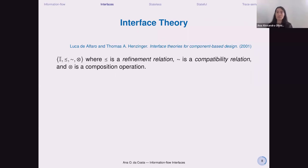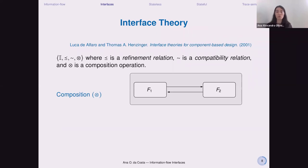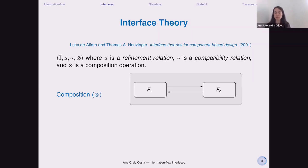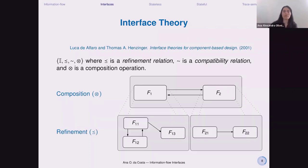We have interfaces as our models, and we need to define two relations and one operation. First, we need a notion of composition: if we have interface F1 and interface F2, what is the result of composing them? We assume any two interfaces can be composed. On top of this, we need a compatibility relation that tells us when composing two interfaces results in a well-formed interface. Finally, we have the refinement relation: does one interface refine the other? For example, is the composition of F1.1, F1.2, and F1.3 a refinement of the original interface F1?